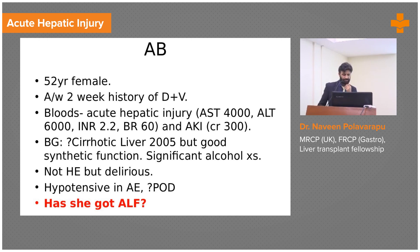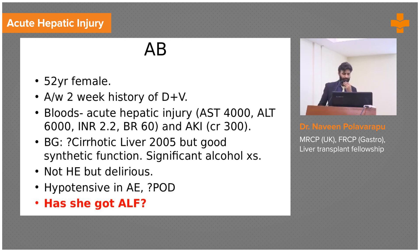She also has an acute kidney injury. She used to drink a lot in the past, but we're not sure whether she's cirrhotic. Imaging didn't show a cirrhotic picture — no splenomegaly, no portal hypertension on ultrasound. She has reasonably good synthetic function. She is delirious, but we didn't think she had encephalopathy. She was hypotensive on arrival to A&E. Do you think this lady has acute liver failure or acute hepatic injury?